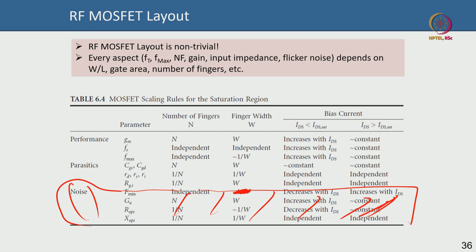gm becomes higher with higher gate width W—for example in mS/mm units—so more fingers means higher gm. Cutoff frequency FT is largely independent of W and N in theory, but in practice a larger width brings larger parasitics. With larger number of fingers at higher frequency, phase delays and other effects can come in.